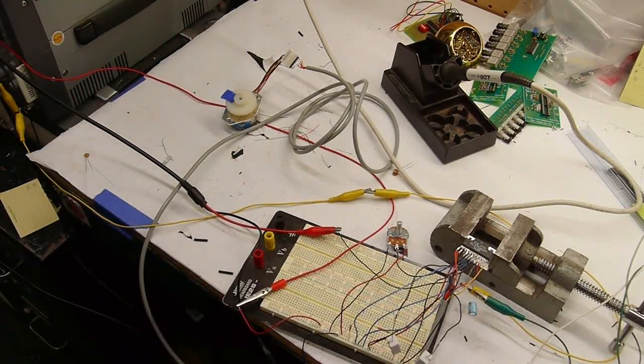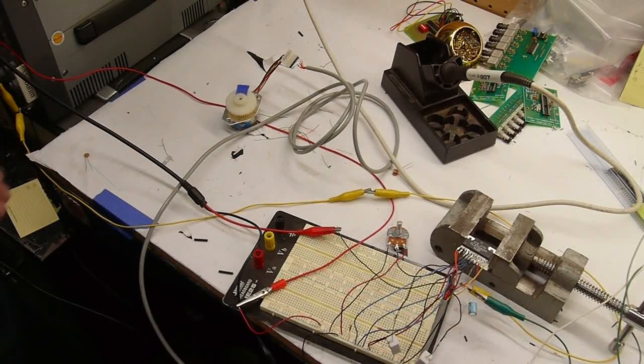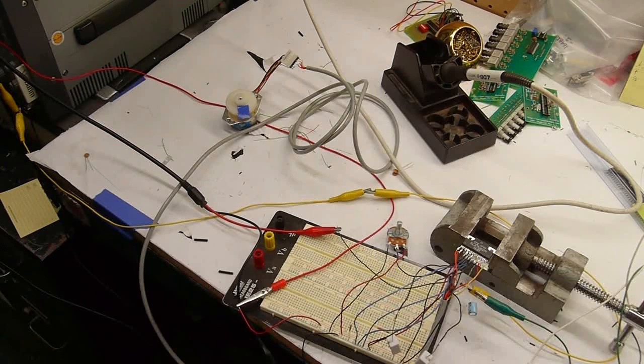So ultimately these will go into an old Wurlitzer jukebox where there's two motors that control the colors that come out the front of the jukebox. They turn physical color wheels.